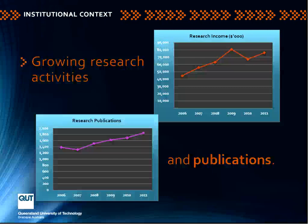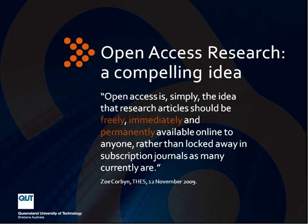We have above-average indicators of research growth at QUT. Our research income and publications level, although the graph doesn't look spectacular, is actually well above the national average for these measures. How then did we come to start talking about open access and thinking about open access at QUT?